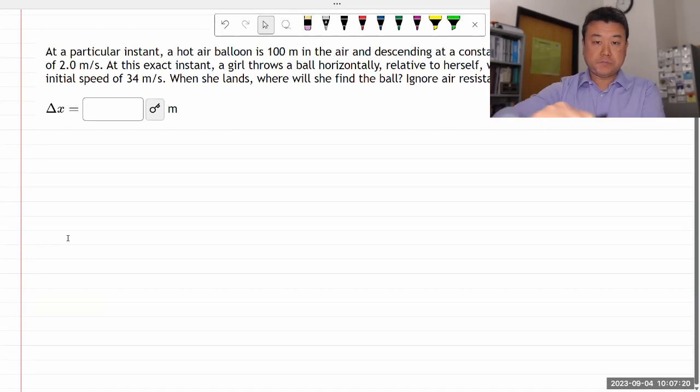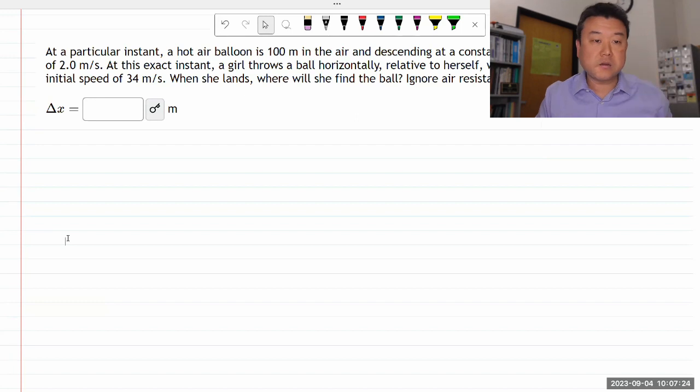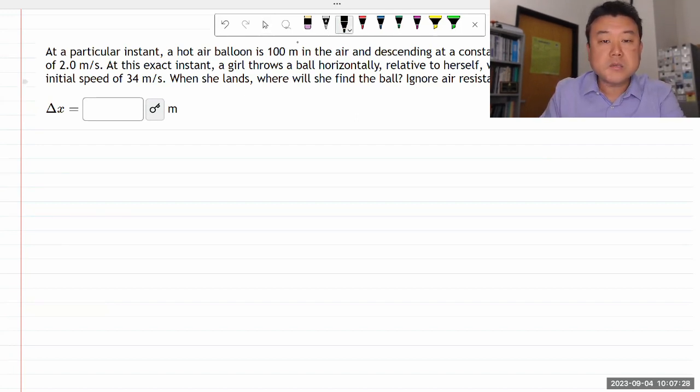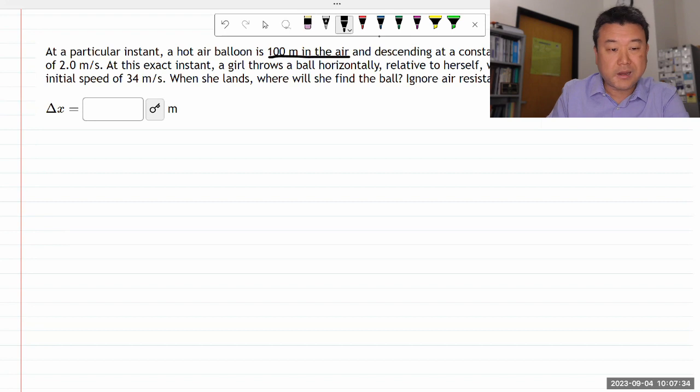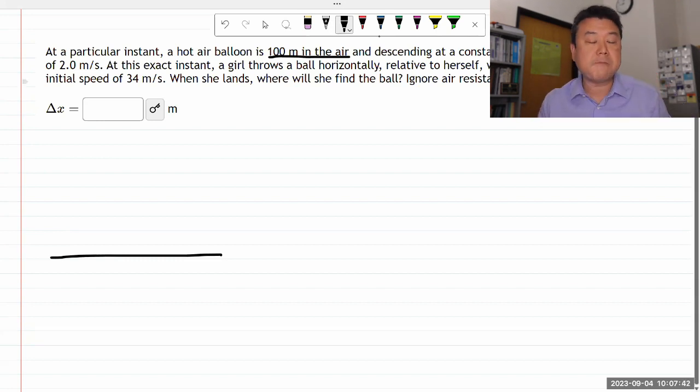So this is what the question says. It says at a particular instance, a hot air balloon is some height in the air. So let me start by just sketching the situation. That's how I like to start all the physics questions, mainly to make sure that I'm absorbing the information that's in the question. And once you sketch it out, sometimes you can see more easily whether the question has given you a complete set of information.